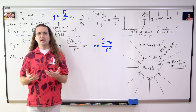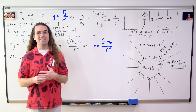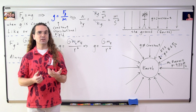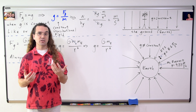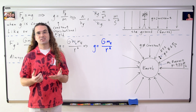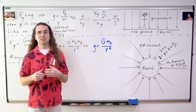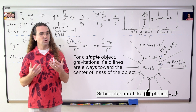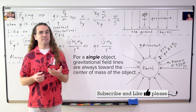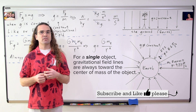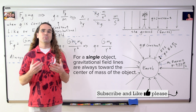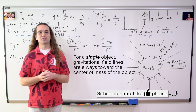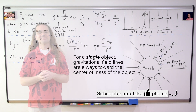Also, notice the equations for gravitational fields we have here are the magnitudes of those fields. For the constant gravitational field, the direction is downward toward the center of the planet. For the gravitational field which exists around any object, the direction is toward the center of mass of that object. So the gravitational field is always toward the center of mass of the object? Right. The direction of the gravitational field is always toward the center of mass of the object creating the gravitational field, because the force of gravity is always a pull. Thank you very much for learning with me today. I enjoyed learning with you.